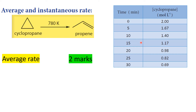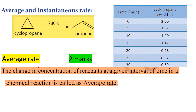What is the average rate? The change in the concentration of the reactant at a given interval of time — a particular interval of time, for example 5 to 10 or 10 to 15 — this chemical reaction rate is called the average rate.